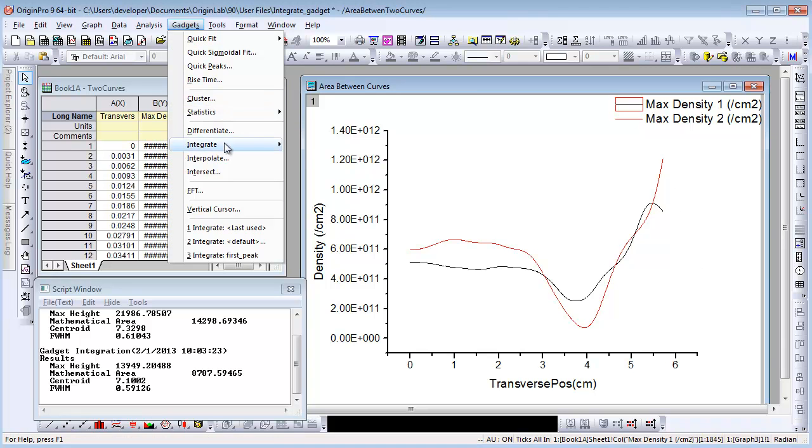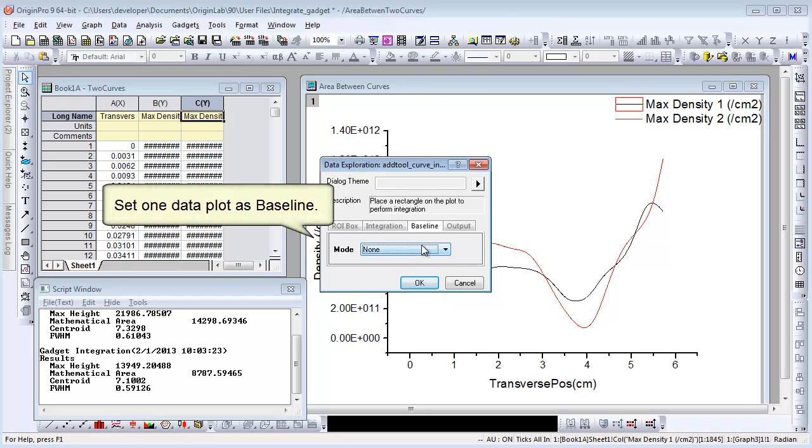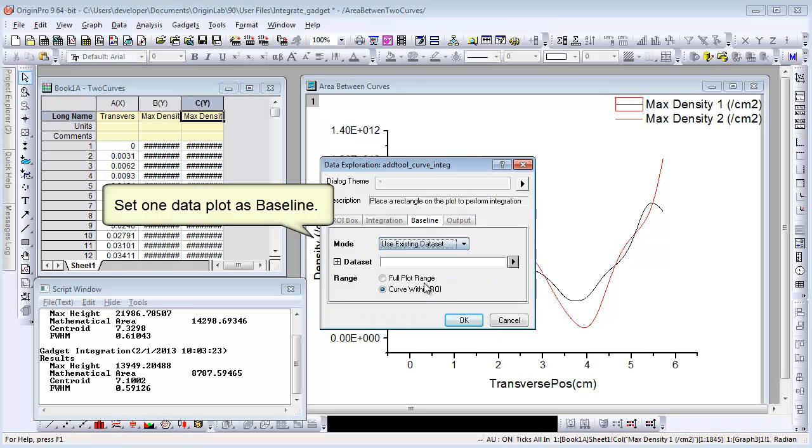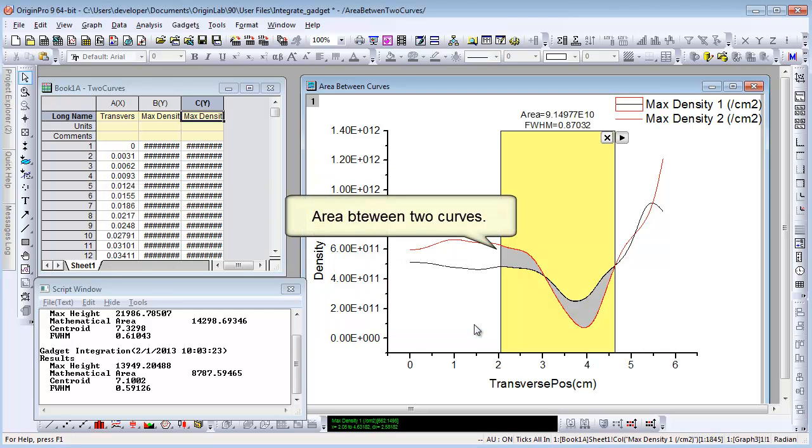Let's choose Gadgets, Integrate, Open Dialog this time. The gadget is applied to the active data plot, MaxDensity1, so we can set MaxDensity2 to be a baseline. Choose Using Existing Data Set and choose Plot 2. Click OK. The area between two curves are calculated.